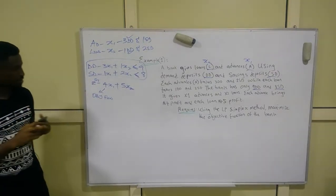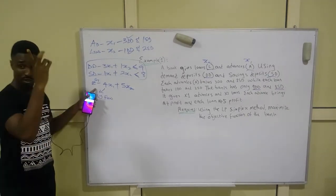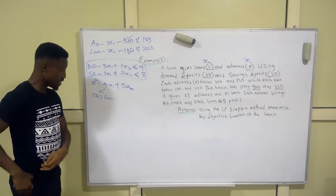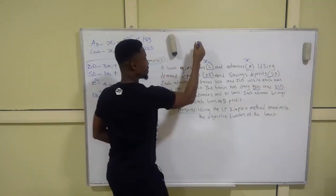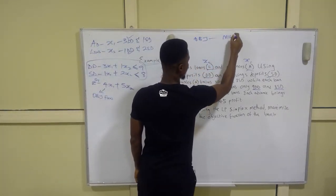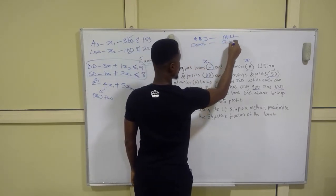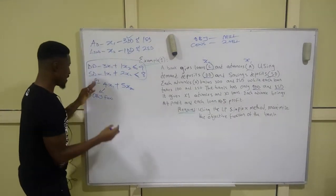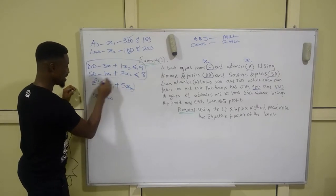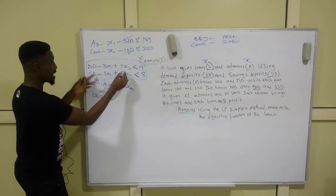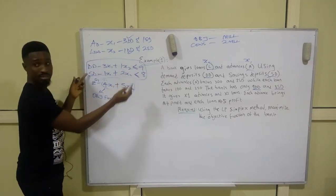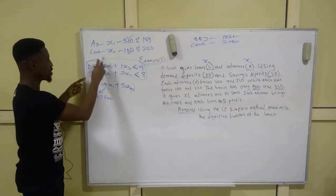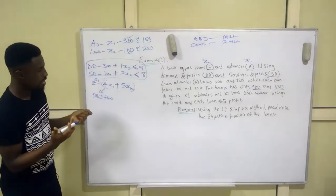Going back to the millionaire analogy — the objective is to become a millionaire, and the constraint is a total of two million. Whatever the objective achieves cannot exceed the constraint; the profit is constrained by the maximum available deposits. So the objective function is constrained by the constraint function.